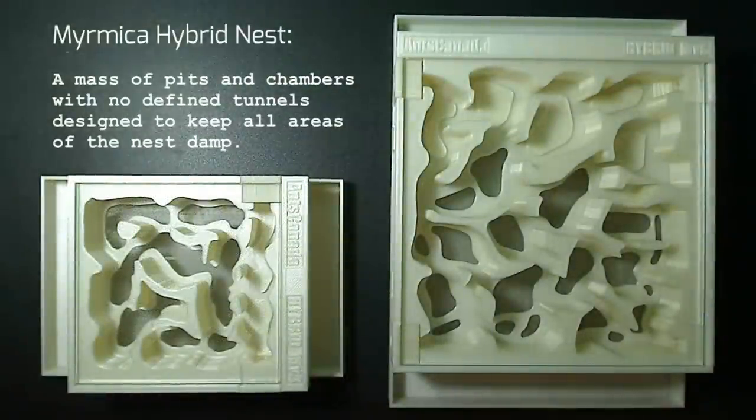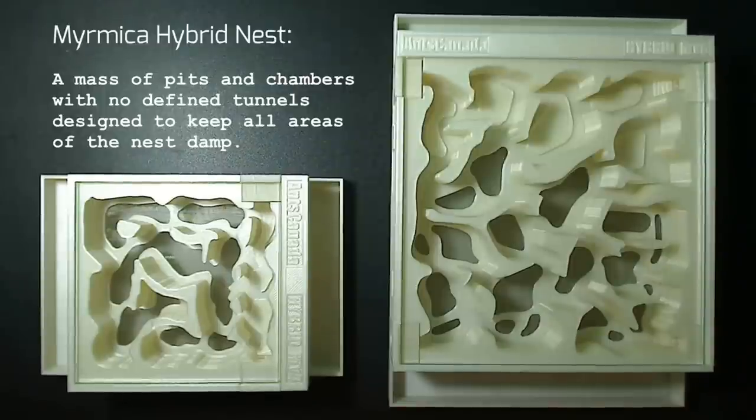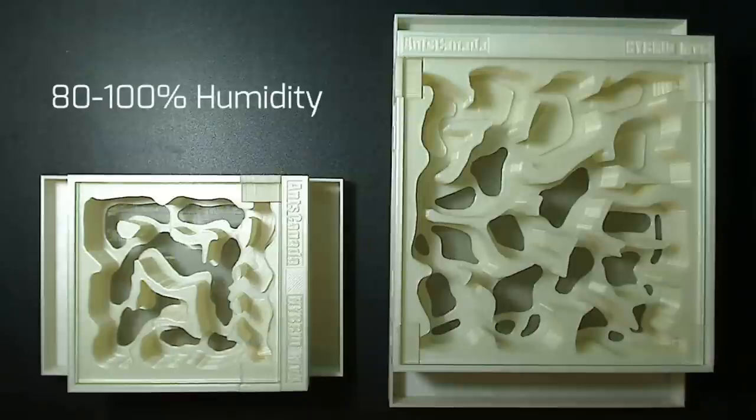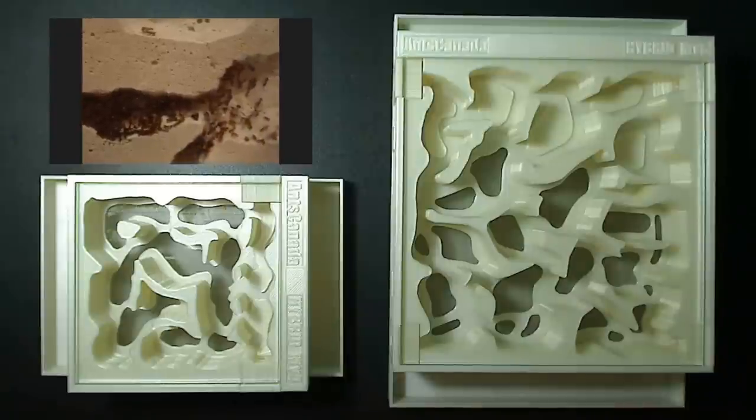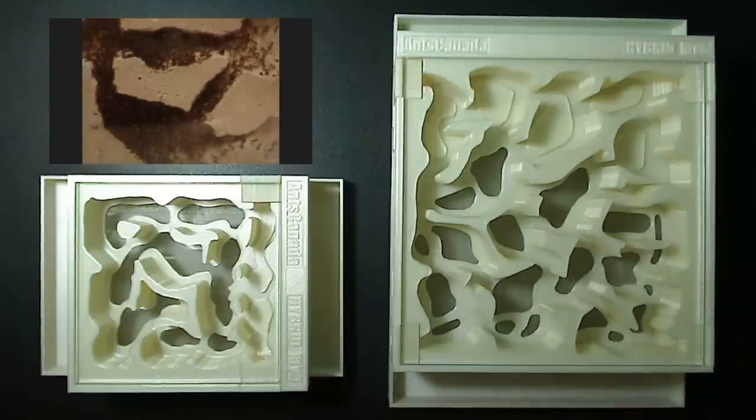The Myrmica hybrid nest. A mass of pits and chambers with no defined tunnels designed to keep all areas of the nest damp. It offers as much as 80-100% humidity. It's designed to house moisture-loving Myrmica, and can also house other common ant species, but may not be suitable for dry-loving ants, like Camponotus and Pogonomyrmex ants.